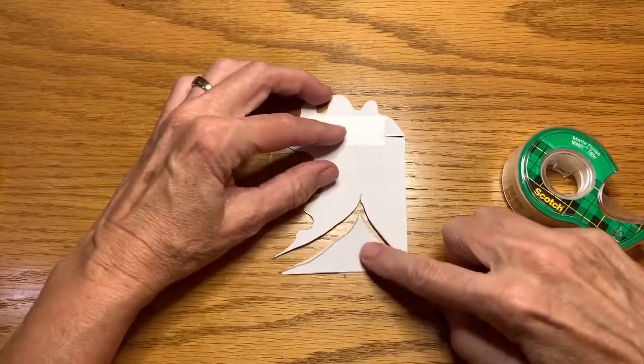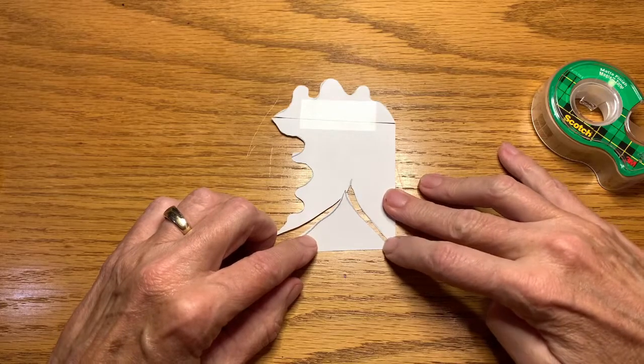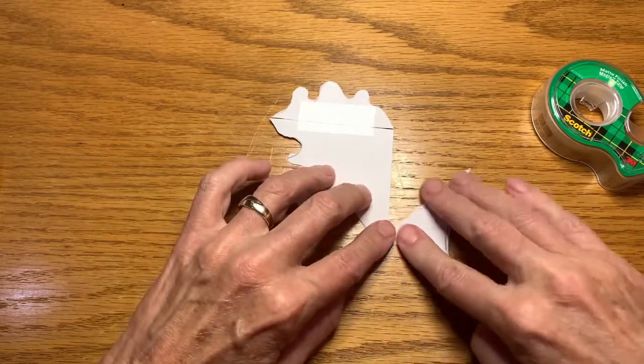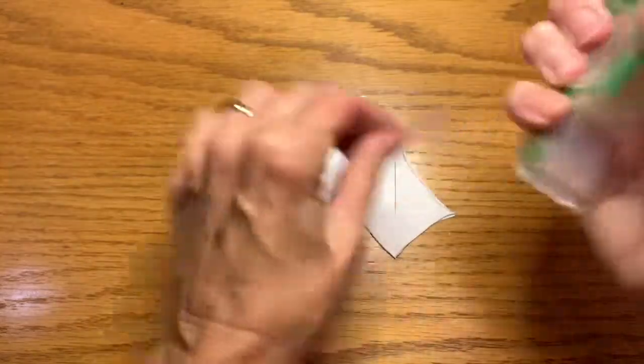Okay, so now that this piece is cut out I am going to rotate it, keeping this corner together, rotate it around until the flat edges meet and I will tape that.